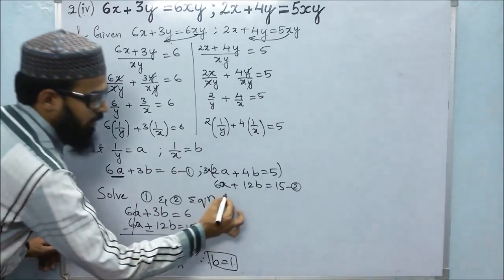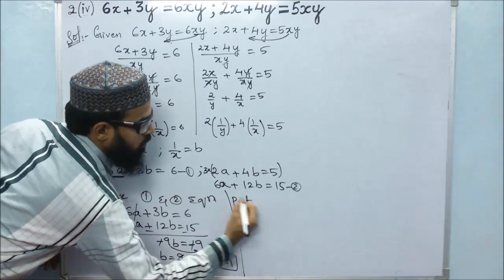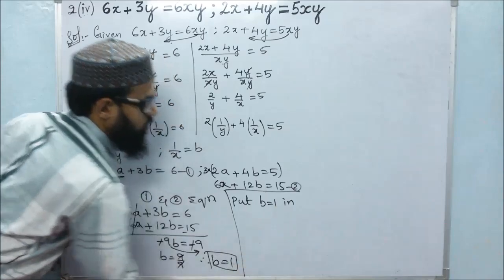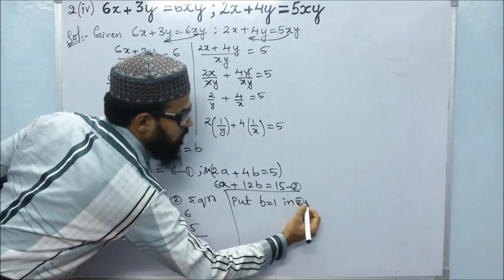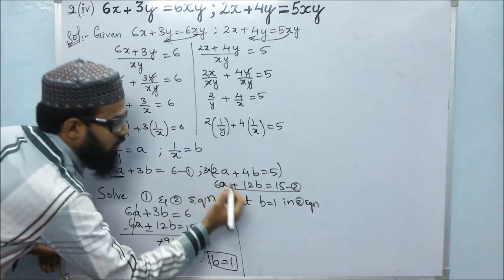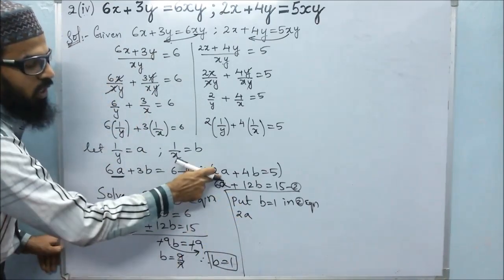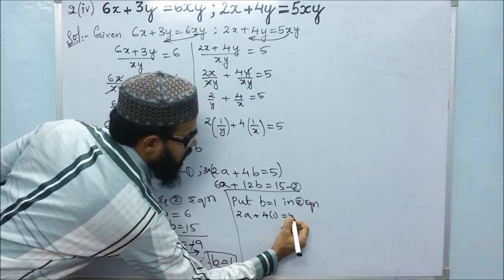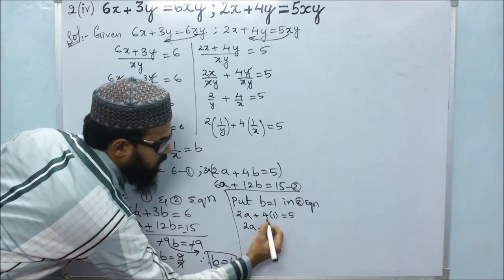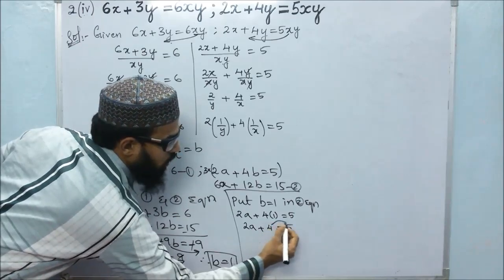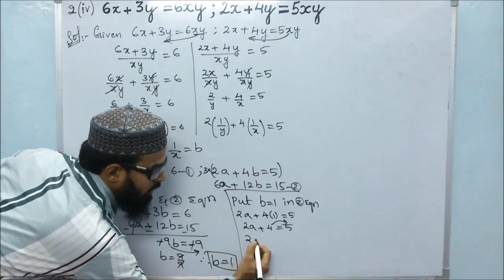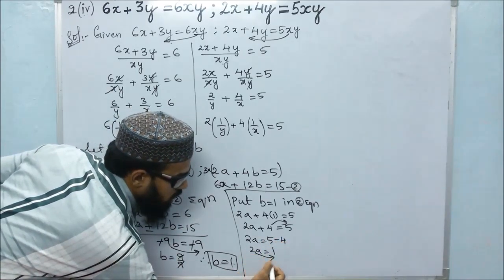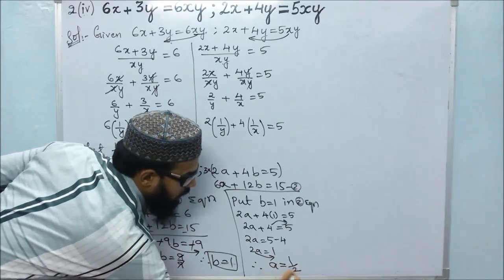For the value of A, put B equals 1 in the second equation: 2A plus 4 times 1 equals 5, so 2A plus 4 equals 5. Moving 4 to the other side: 2A equals 5 minus 4, which is 1. Therefore A is equals to 1 by 2.